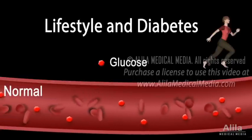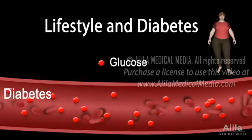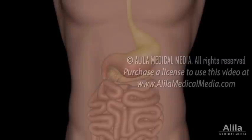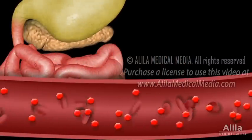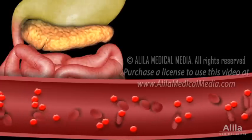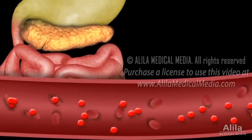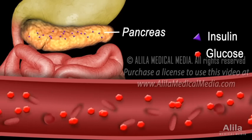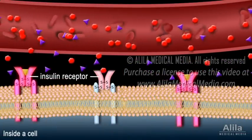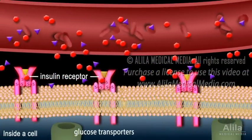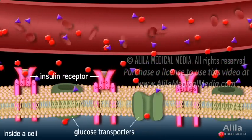Diabetes refers to a group of conditions characterized by high levels of blood glucose, commonly known as blood sugar. Glucose comes from digestion of carbohydrates in food and is carried by the bloodstream to various body tissues. But glucose cannot cross the cell membrane to enter the cells on its own. To do so, it requires assistance from a hormone produced by the pancreas called insulin. Binding of insulin to its receptor on a target cell triggers a signaling cascade that brings glucose transporters to the cell membrane, creating passageways for glucose to enter the cells.